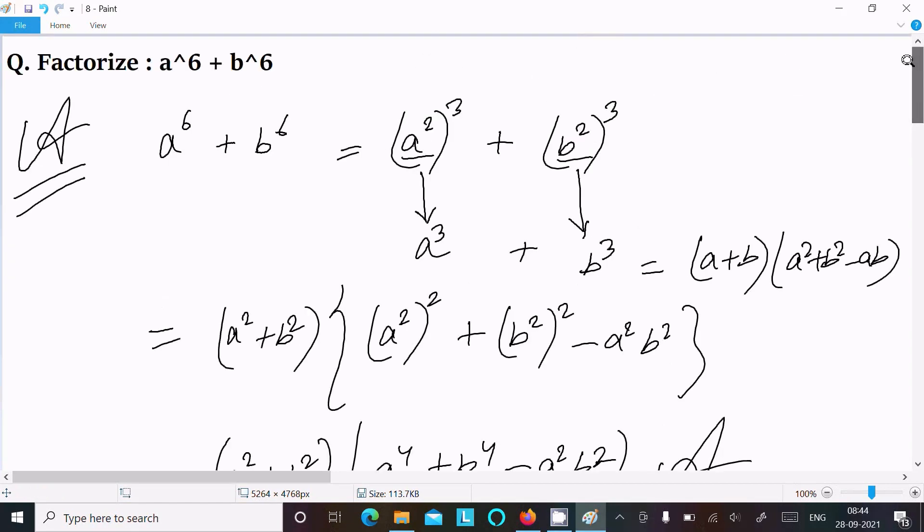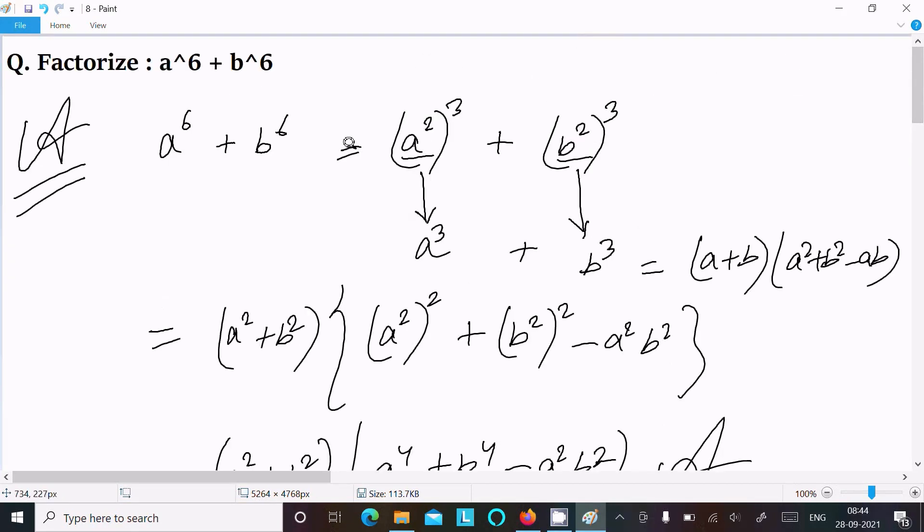One time I am going to repeat: write the given, and here a power 6 we can write (a^2)^3 plus (b^2)^3. Here this assume a and this all assume b, power 3, power 3. So a^3 plus b^3 formula, this is.